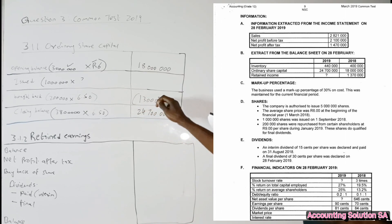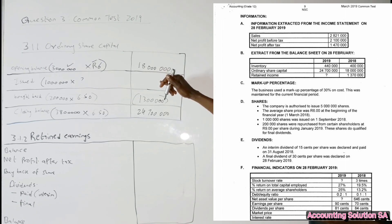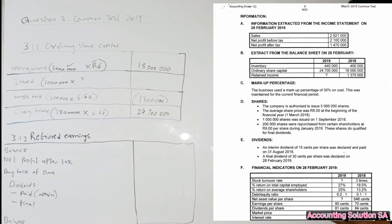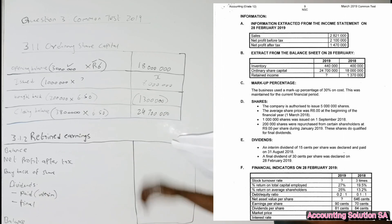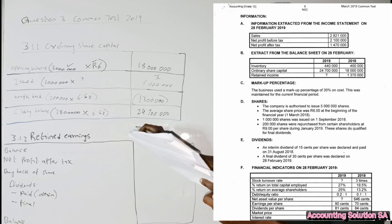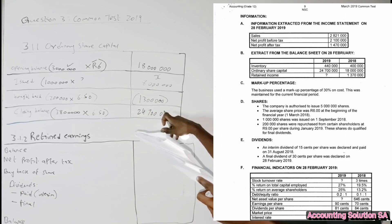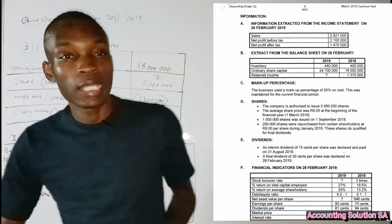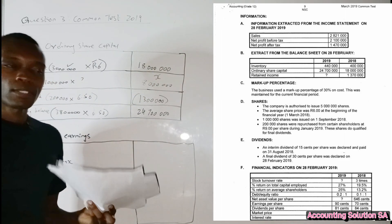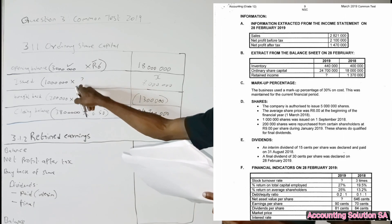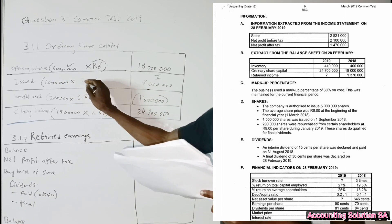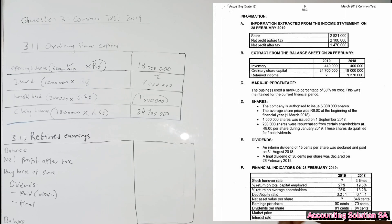Remember, buyback is in brackets because it's a minus. We say: opening (18,000,000) plus x minus 1,300,000 equals 24,700,000. You form the equation and solve for x — even if you did maths literacy you know how to solve for x. You get x equals 8,000,000. Now that we have this, we can go back: 8,000,000 divided by 1,000,000 shares issued gives us R8 per share. That's how you do this one.